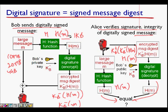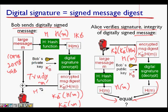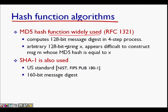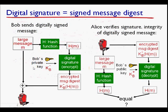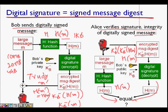This approach is efficient because the message digest is smaller and much easier to handle. It is also secure because it is infeasible for Trudy to find an m-dash such that H(m-dash) equals H(m), so no one can forge the message. Common hash functions include MD5, which produces a 128-bit message digest, and SHA-1, which produces a 160-bit message digest. That covers digital signatures using hash functions.